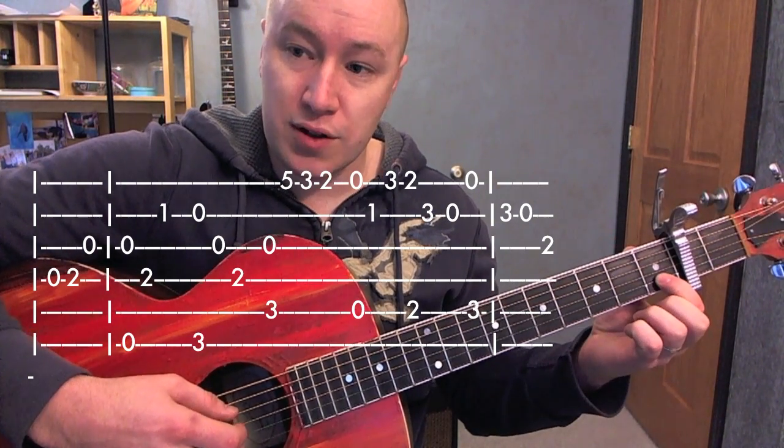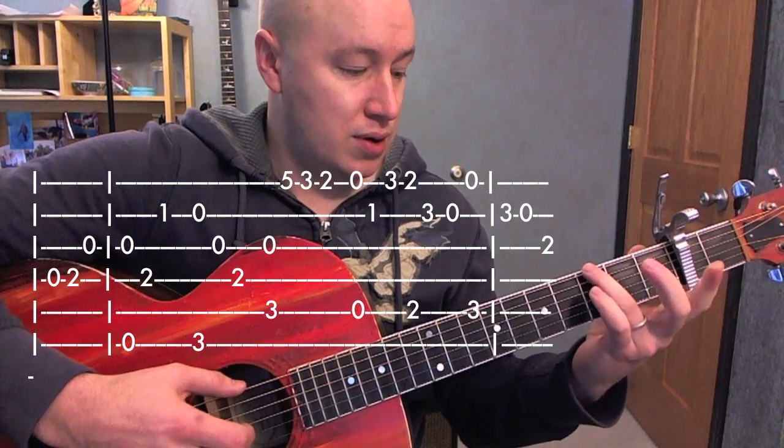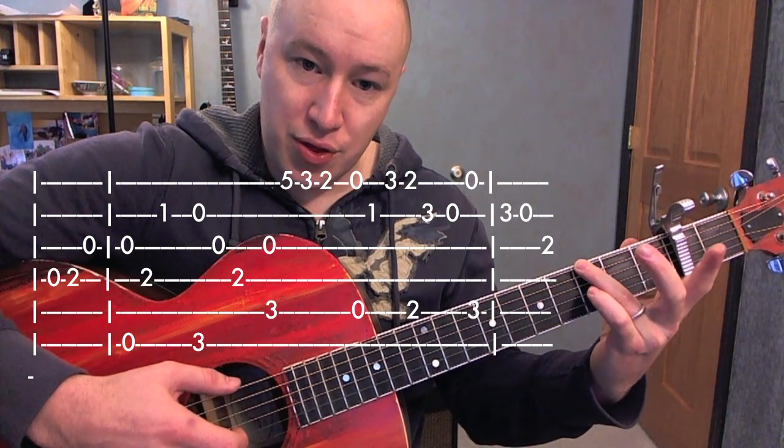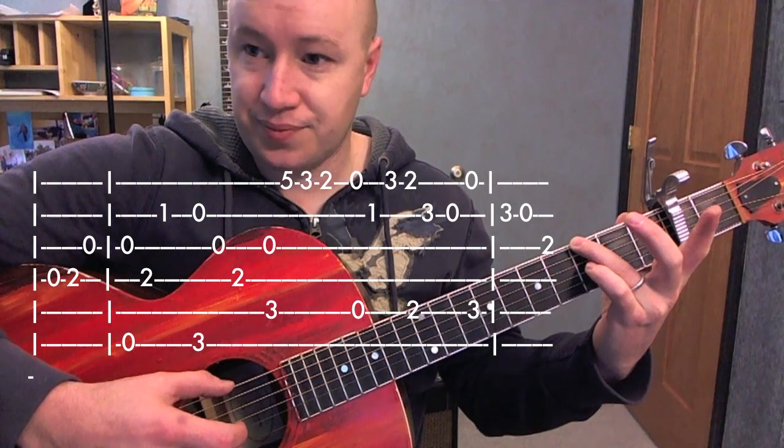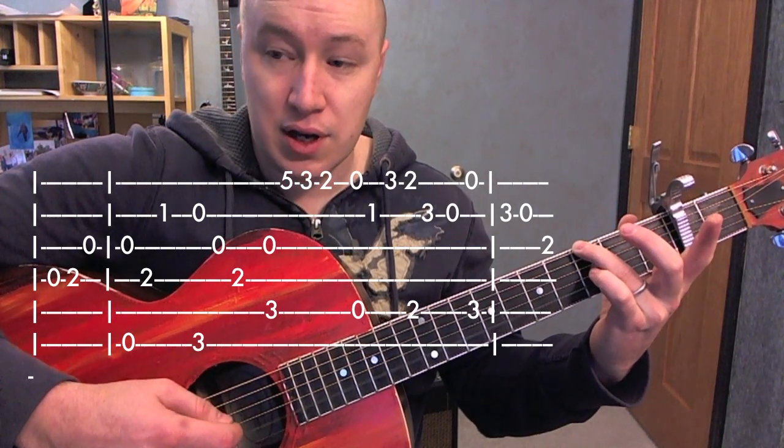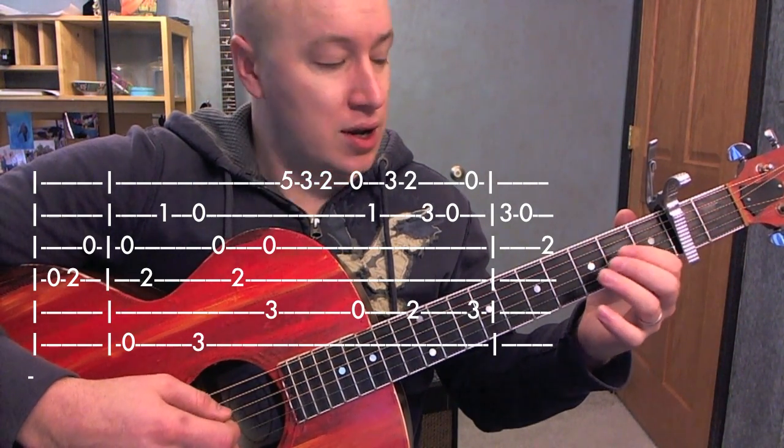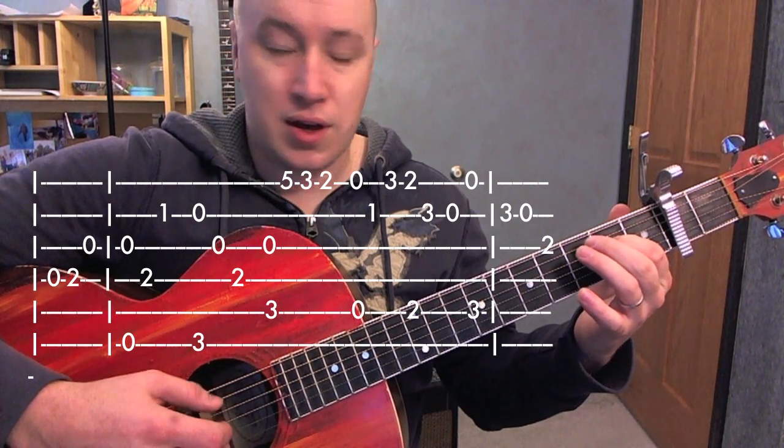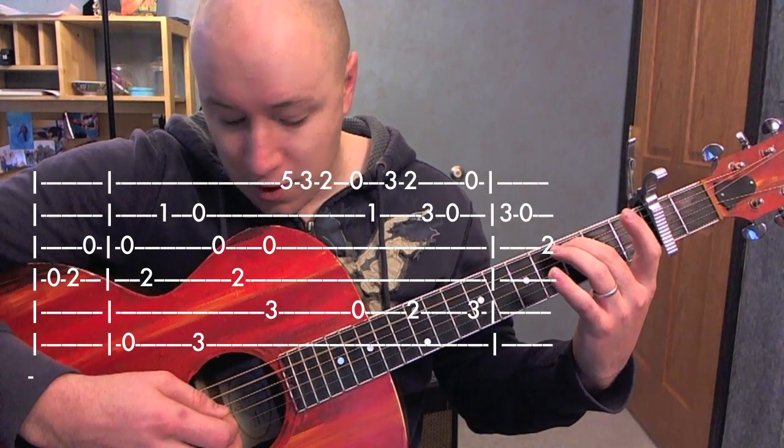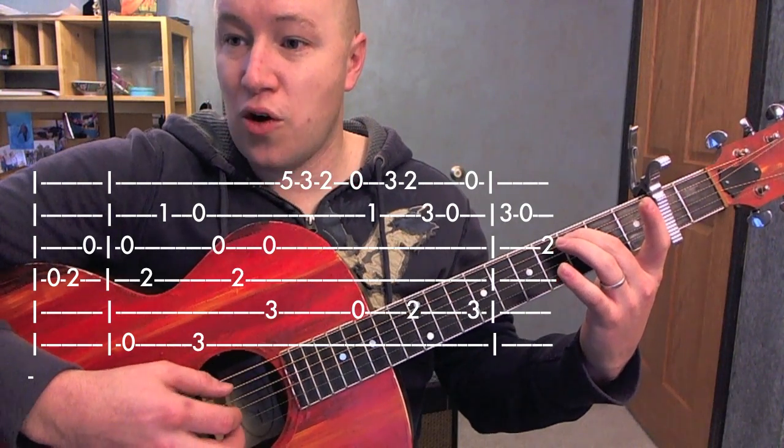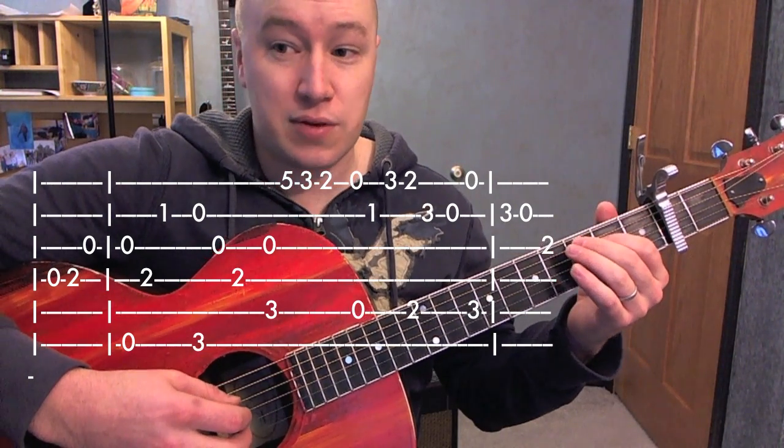Then out to 1 on the 2nd string. And then I'm playing 3 on the 6th and 0 on the 2nd, to the 3rd string open, 2nd fret on the 4th, to 3rd fret on the 5th and open on the 3rd. That's what we have so far.